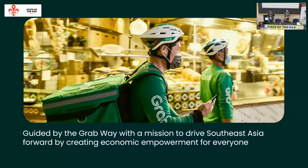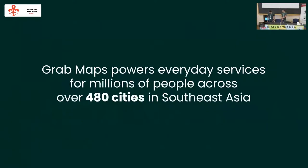OSM powers a lot of these. Just to give you a sense of scale — in those eight countries we operate in Southeast Asia, we cover roughly 480 cities, from really small towns like the one Chris talked about, all the way to mega capitals like Jakarta with 20 to 30 million people. We have millions of driver partners driving these roads every single day, covering all the drivable roads in Southeast Asia a few times a day during the course of just operating our business.